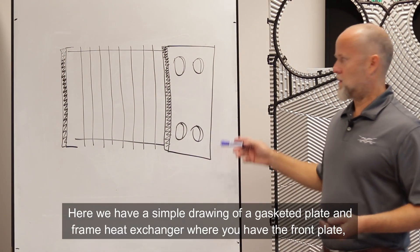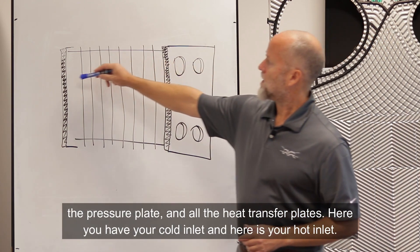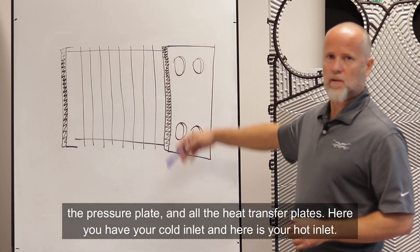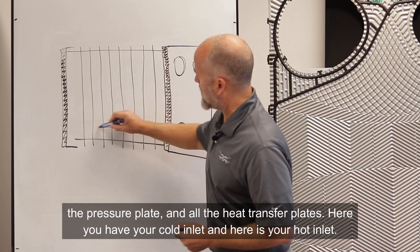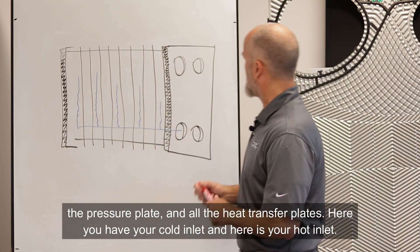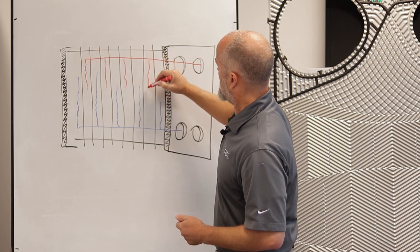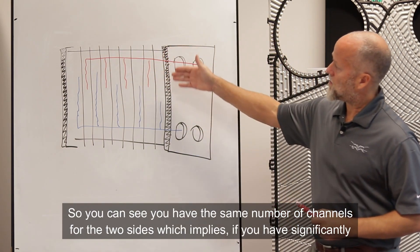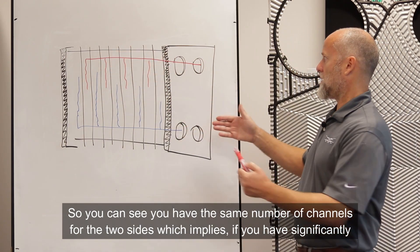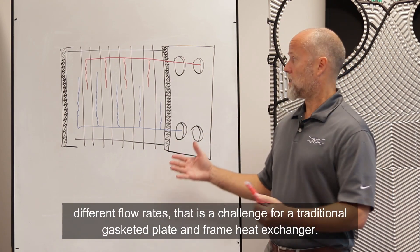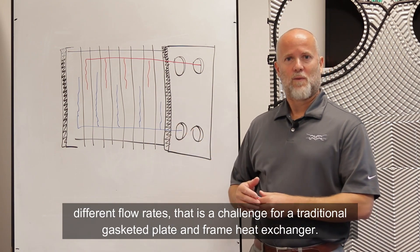Here we have a very simple diagram — a drawing of a gasketed plate and frame heat exchanger. You have the front plate, the pressure plate, and all the heat transfer plates. Here you have your cold inlet and here you have your hot inlet. As you can see, you have the same number of channels for the two sides. That implies that if you have significantly different flow rates, that is a challenge for a traditional design gasketed plate and frame heat exchanger.